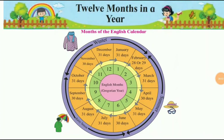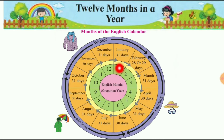Student subject: math. Topic: 12 months in a year. Do you know how many months are in a year? 12 months. Look here, in this circle — the first month is January, second is February, third is March, fourth is April, fifth is May.